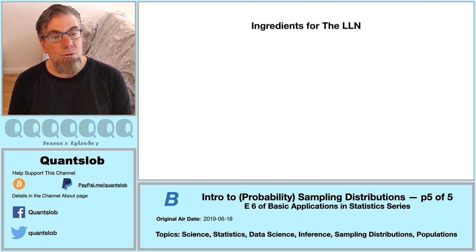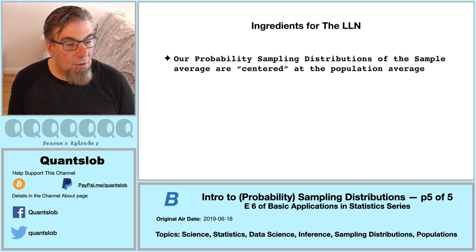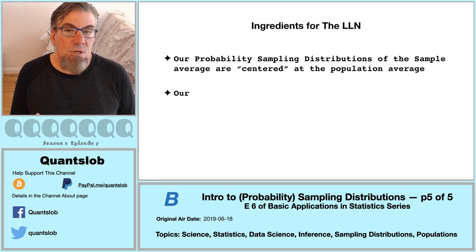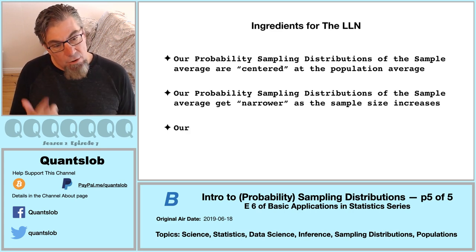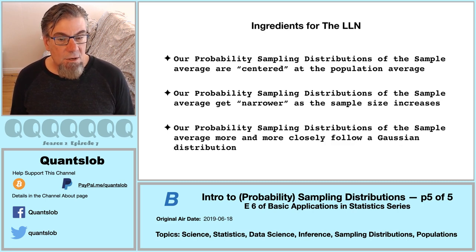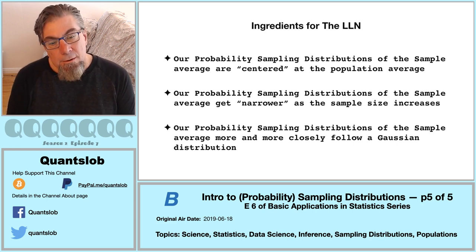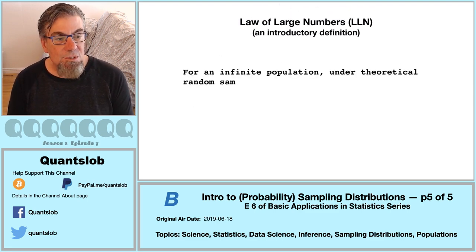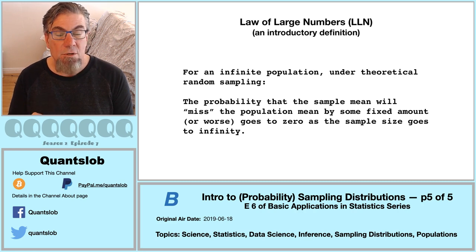Like so many Legos, we're going to assemble the law of large numbers. No matter what the sample size, the sampling distribution of the sample average will be centered at the true population average. As the sample size increased, the sampling distribution of the sample average became more and more narrow. This last ingredient — concerning the Gaussian shape of the sampling distribution — is sufficient but not necessary for the law of large numbers. It basically assures us that extreme values are not excessively likely. As we get a larger sample, the sample statistic sample average will become a more precise estimator for the true population average — and the possibility that our sample average will miss the true average by some amount becomes less and less probable as the sample size grows.